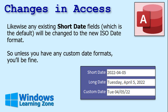Now, how does this affect Microsoft Access? Likewise, any existing short date fields — which is the default date format in Microsoft Access — will be changed to the new ISO date. So unless you have custom date formats, you'll be fine. My short dates got changed to the ISO format, long dates look unambiguous as is, and any field with a custom date format kept the old month-day-year format. Those custom ones won't change; the standard ones will change automatically.